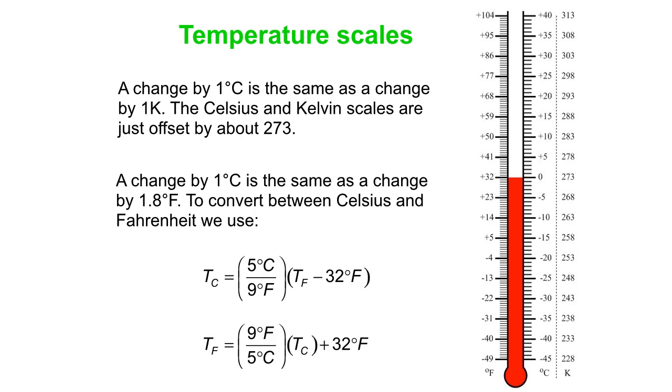Or the other way, the temperature in Fahrenheit is 9 degrees Fahrenheit divided by 5 degrees Celsius. That's multiplied by the temperature in Celsius. And then you add on 32 degrees Fahrenheit. And note that the Fahrenheit and Celsius scales agree at minus 40 degrees. And then they go up from there.